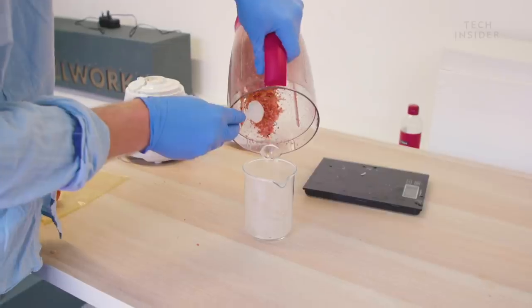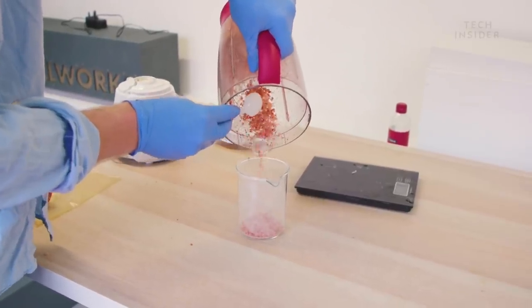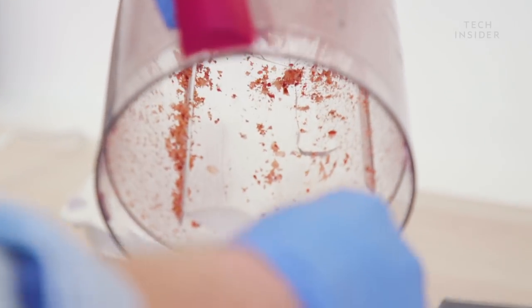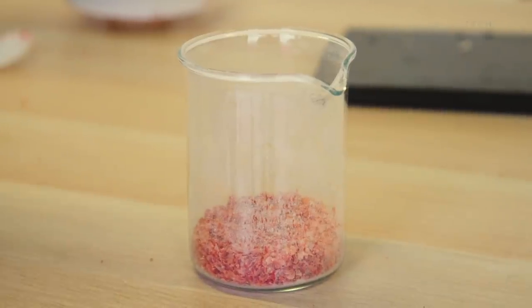We started working with lobsters because they're a really interesting waste source. By weight, chitin accounts for about 30% of the shell. And it's also the case that with lobsters, they're eaten at the restaurant. So as opposed to shellfish or shrimp where they get industrially deshelled, these lobster shells are just going to waste at the restaurant source.